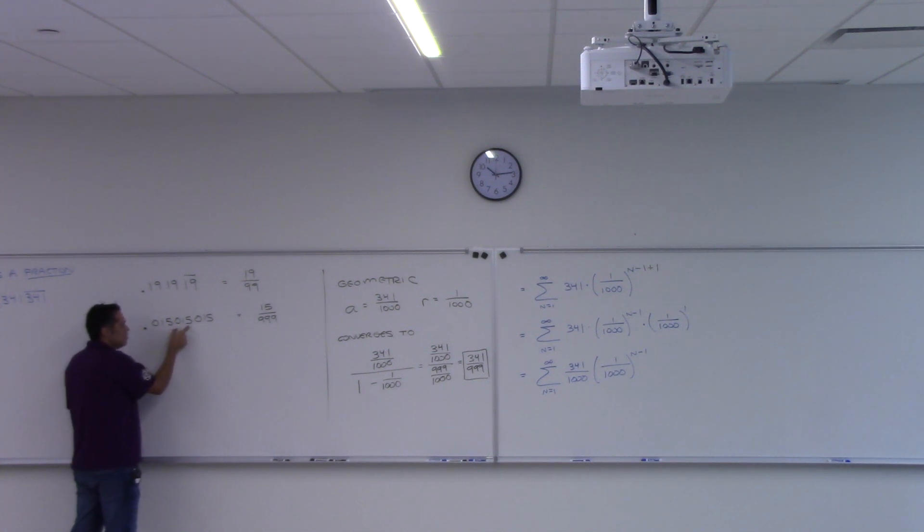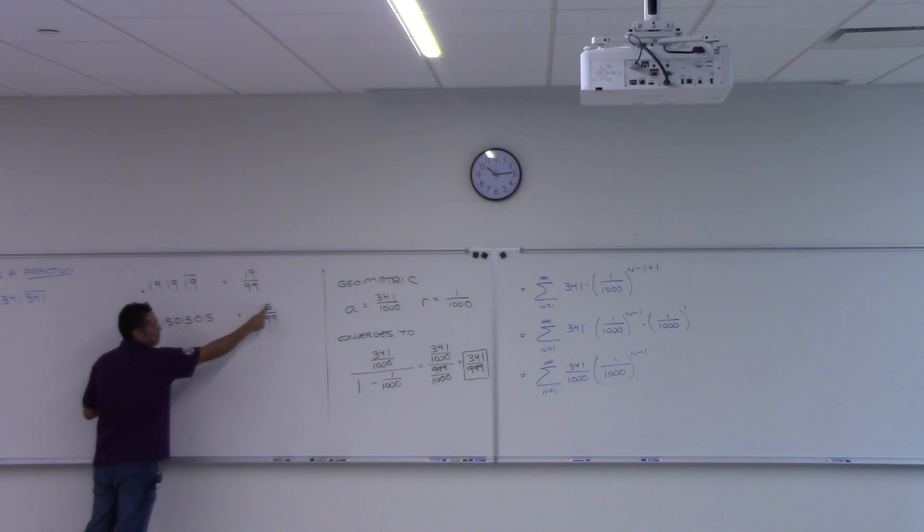However big this group is, is how many nines you have down there. So if you have 015, 015, 015, it'll be 015 or 15 over 999.